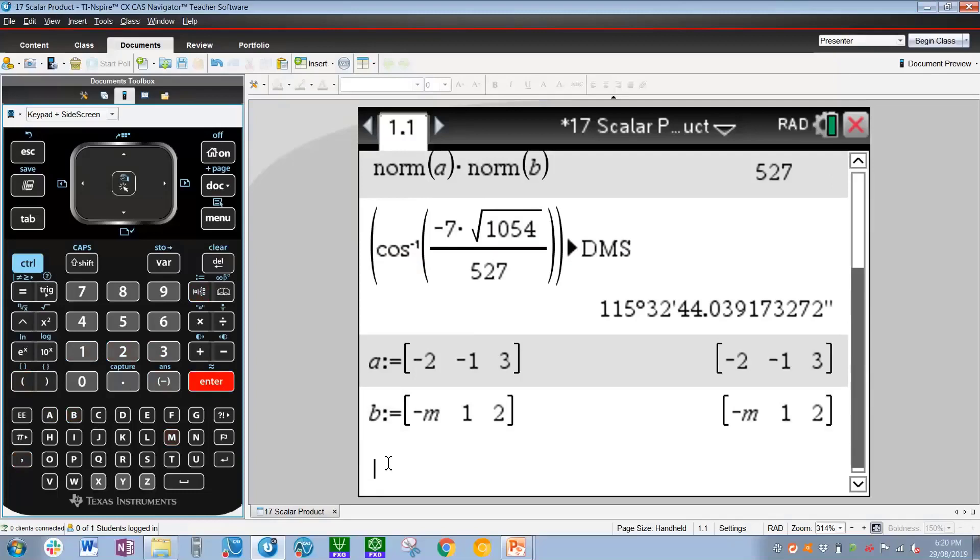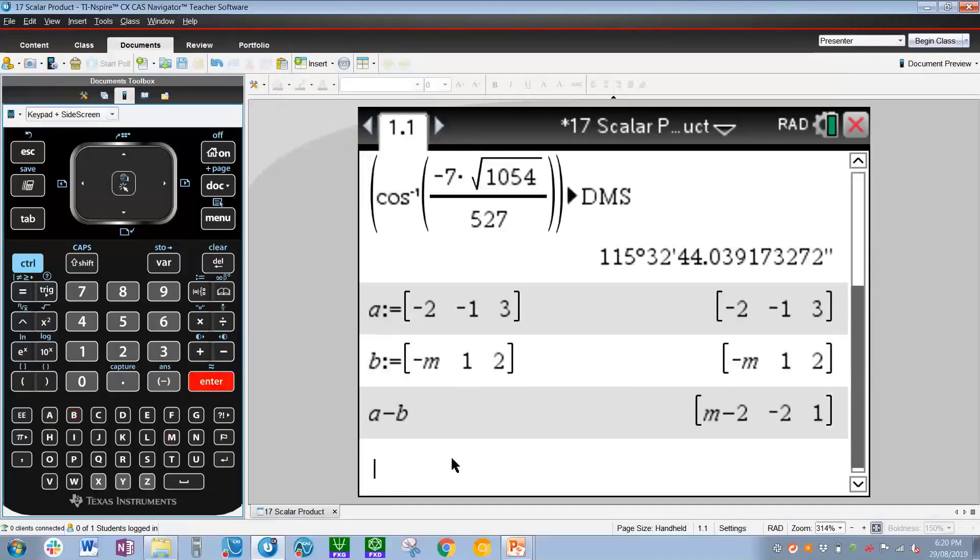So we want a-b to be perpendicular to b. So let's get the dot product of a-b and b. First things first, we can simply find what a-b is. a-b, which is this vector here, (m-2)i-2j+k.